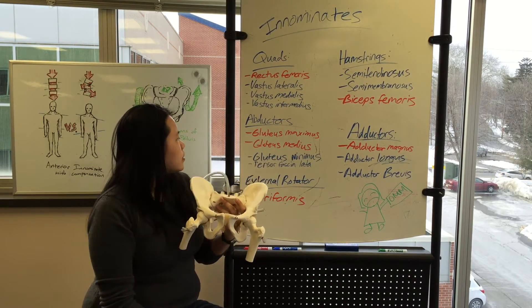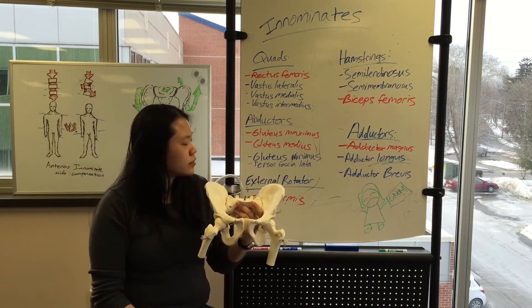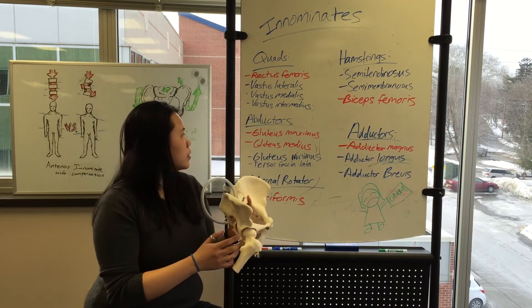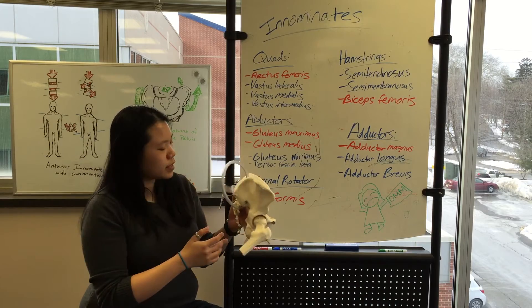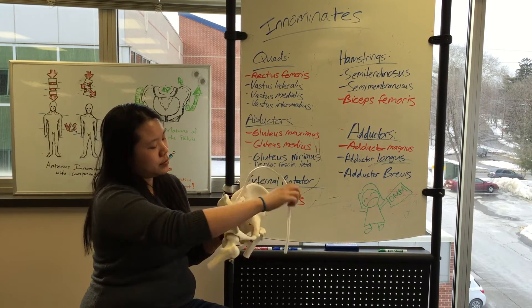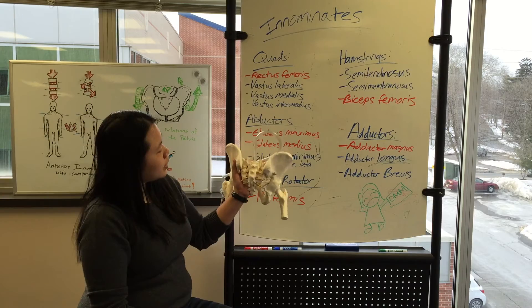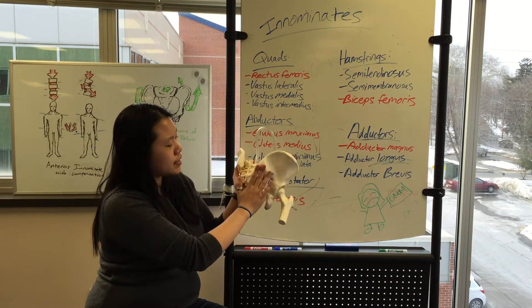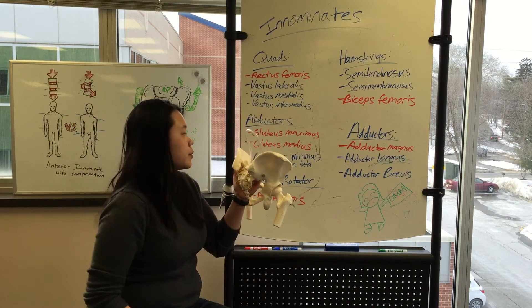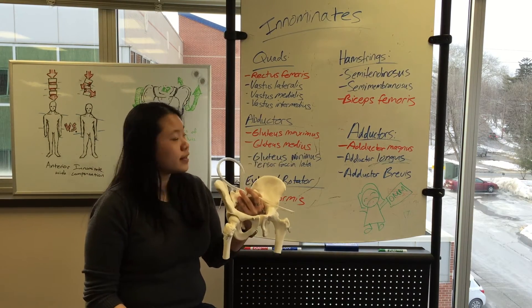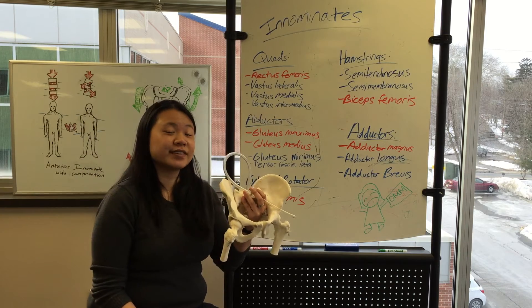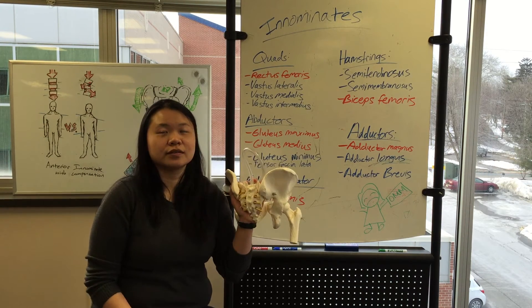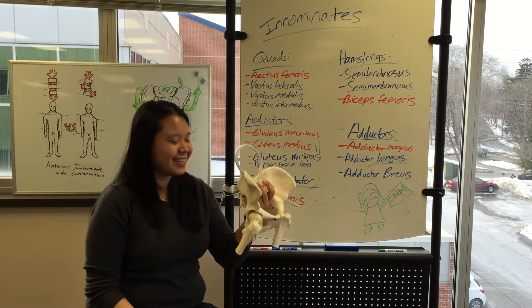You have your abductors, which are your gluteus maximus and your gluteus medius, so your abductors are going to be responsible for those out-flares. Your gluteus maximus is one of the major players there, and that's going to attach from your sacral base and PSIS outwards towards the greater trochanter of the femur. If I didn't define it before, ASIS is anterior superior iliac spine, and your PSIS is your posterior superior iliac spine.